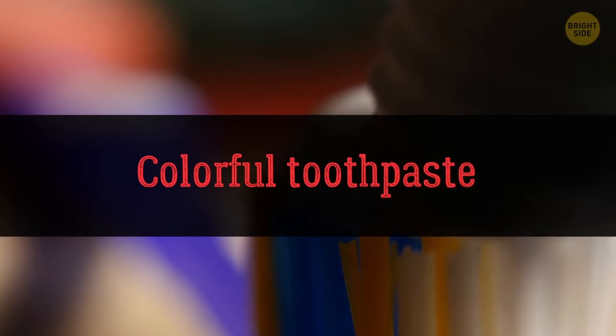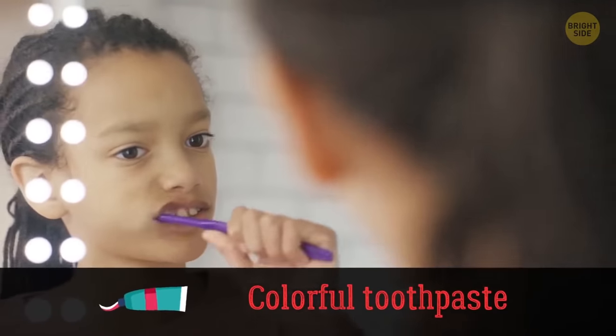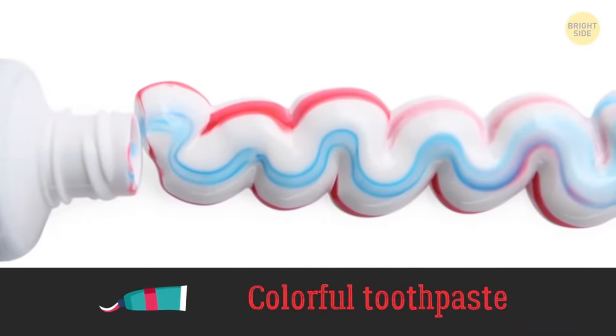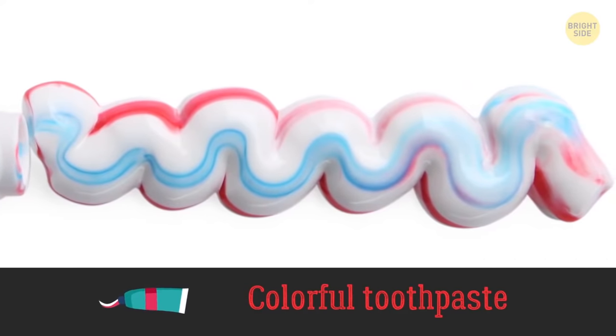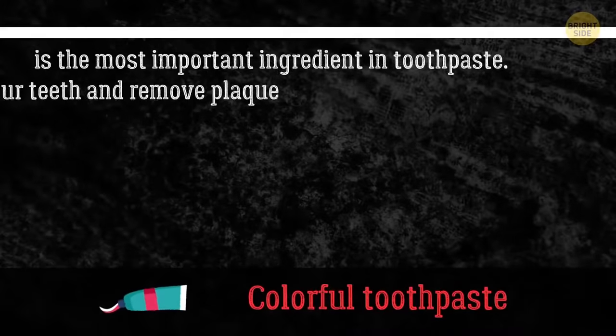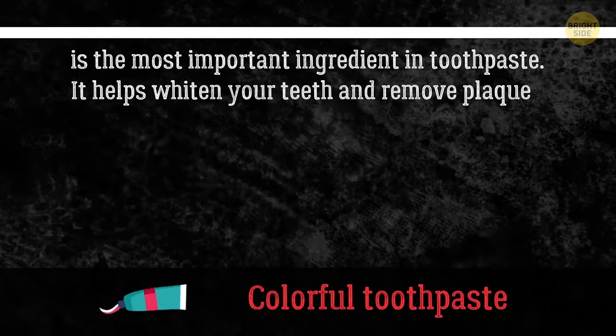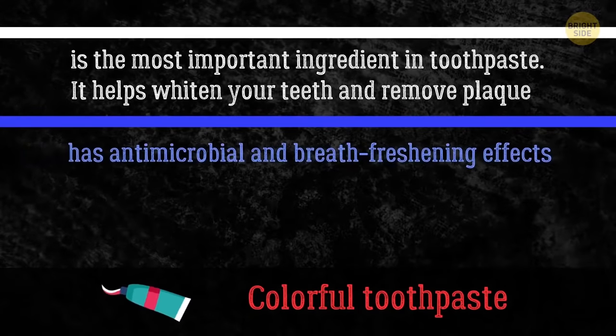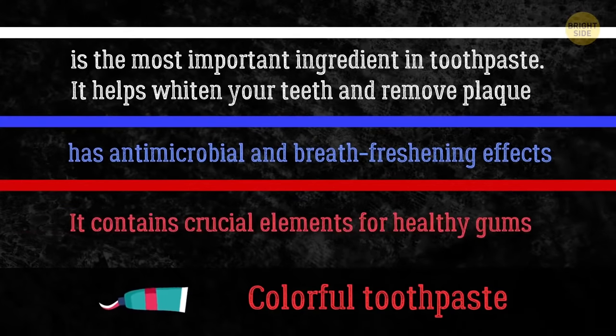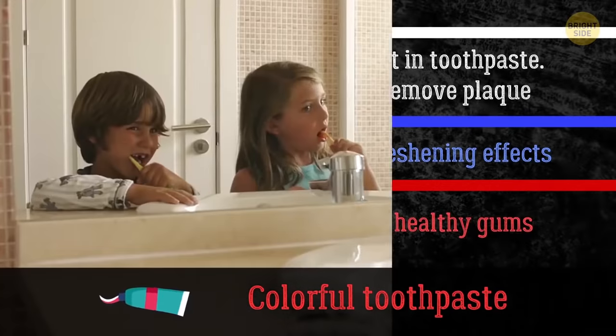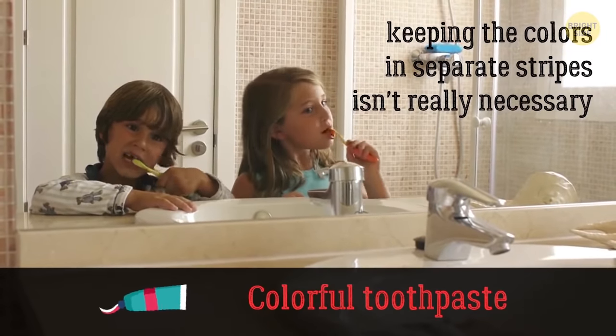Have you ever wondered why classic toothpaste is striped red, white, and blue? It's because it's French, right? Nah. It turns out that each stripe has different ingredients and purposes. Fluoride, the white part, is the most important ingredient in toothpaste. It helps whiten your teeth and remove plaque. The blue or green gel has antimicrobial and breath-freshening effects. The red part was added later. It contains crucial elements for healthy gums. In fact, keeping the colors in separate stripes isn't really necessary. It's just a clever marketing strategy.